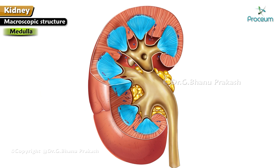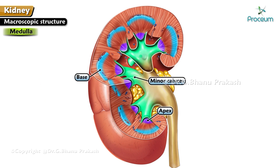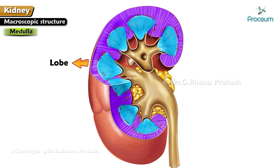The medulla contains 5 to 11 striated, dark, and conical masses known as renal pyramids. Each pyramid has a base directed to the cortex and an apex which projects into the minor calyces as the renal papilla. Each pyramid along with the overlying cortical arch forms a lobe of the kidney.